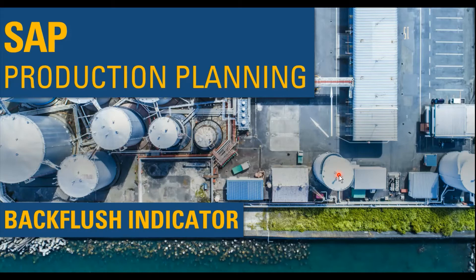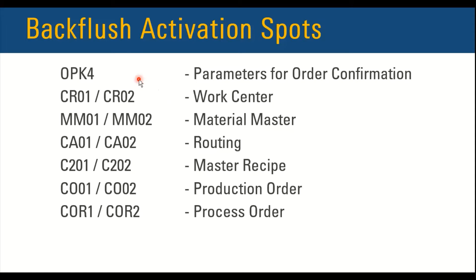Let's get into the details and see in what configurations and master data we can activate the backflush indicator. On the screen you can see the transaction codes on the left side. The first one is OPK4, where we define the parameters for the order confirmation. This is a configuration that can be activated at the plant level.